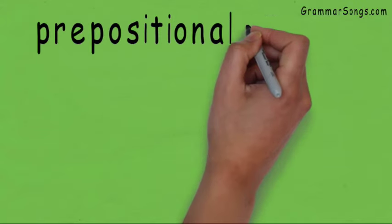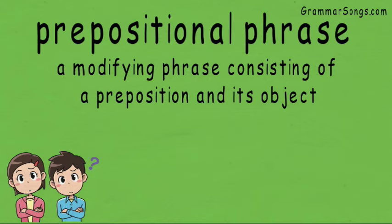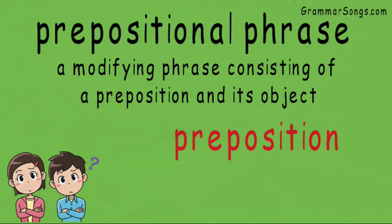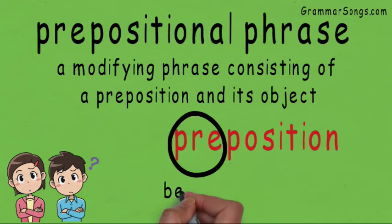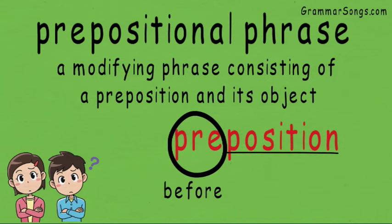A prepositional phrase is a modifying phrase consisting of a preposition and its object. A preposition is a word that is often directional, telling where an object is. The word preposition has the prefix 'pre,' which means before. A preposition is positioned before a person or object and often tells where something or someone is, providing more information for the listener or reader.